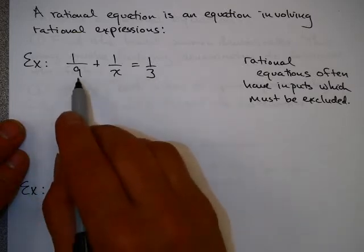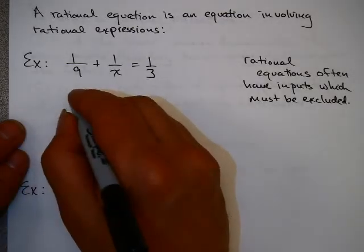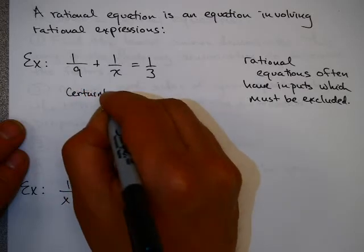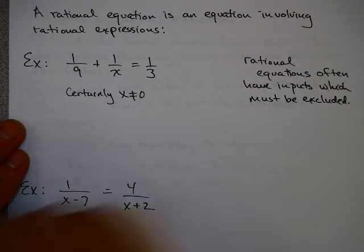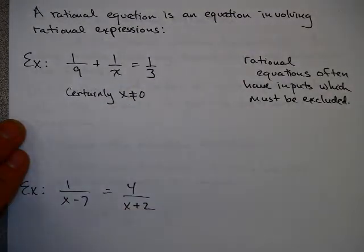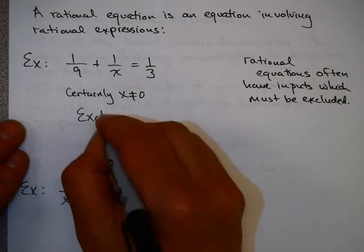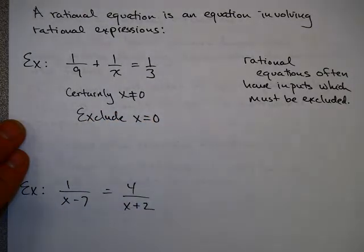Take a look at this one. This denominator is 9, this denominator is 3, this denominator is x. Certainly x cannot equal 0, for if it did, that would result in a 0 denominator. We know that cannot be possible. So we have to exclude the value x equals 0. That's not a possible solution to this equation.